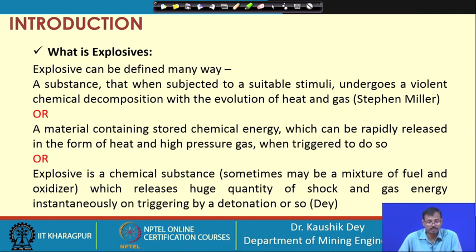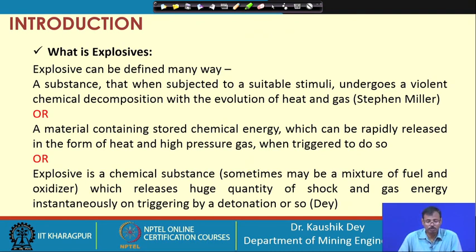The essential requirement of an explosive which can be commercially allowed or authorized for public use must have some control over it - the triggering of the explosive must be within the control limit of the user. The second definition tells that the chemical substance releases energy in the form of heat and gas pressure when it is asked to do so.